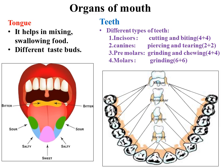Next are the premolars, responsible for grinding, chewing, and crushing the food into simpler forms. The total number of premolar teeth is four plus four in both jaws, equaling eight. The molars are mainly responsible for grinding and are present in the posterior inner portion of the gums, totaling six plus six in both jaws, equaling twelve. So the total number of teeth in an adult person is 32.